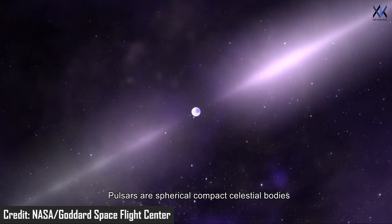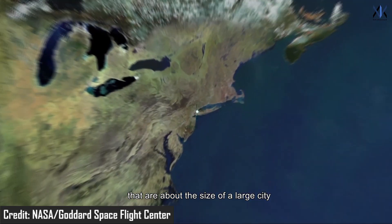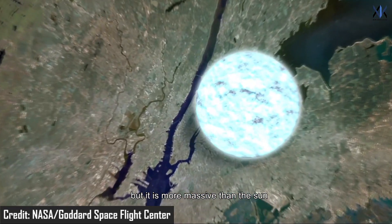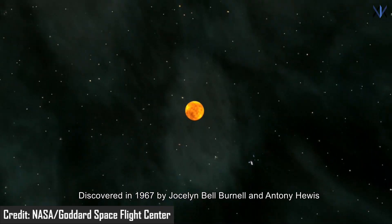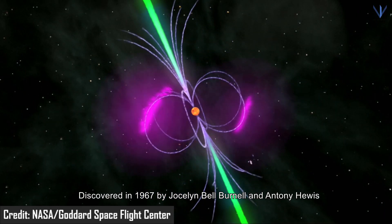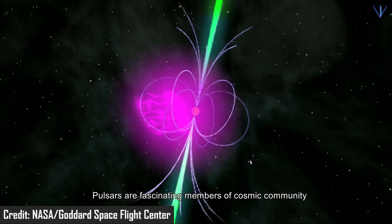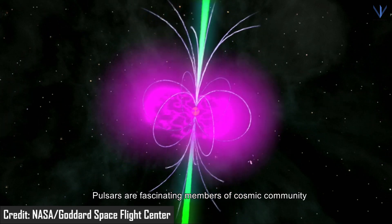Pulsars are spherical compact celestial bodies that are about the size of a large city but are more massive than the Sun. Discovered in 1967 by Jocelyn Bell Burnell and Anthony Hewish, pulsars are fascinating members of the cosmic community.